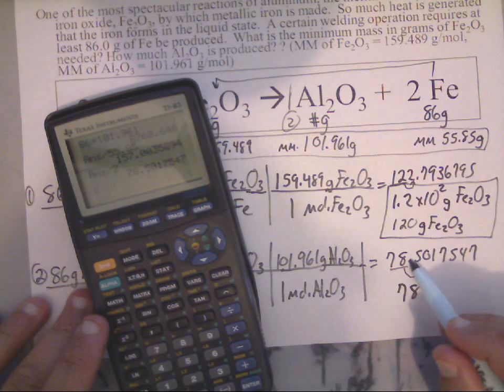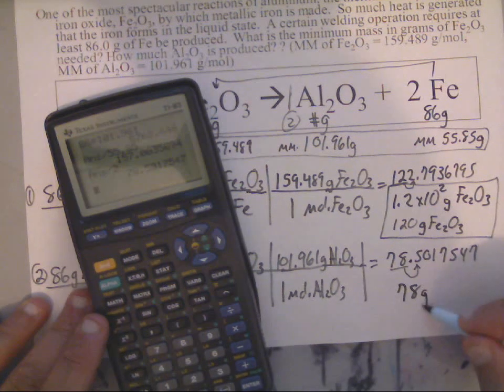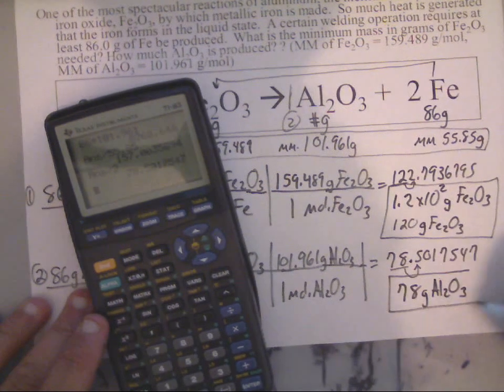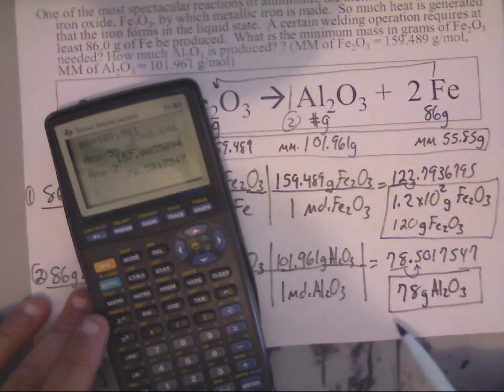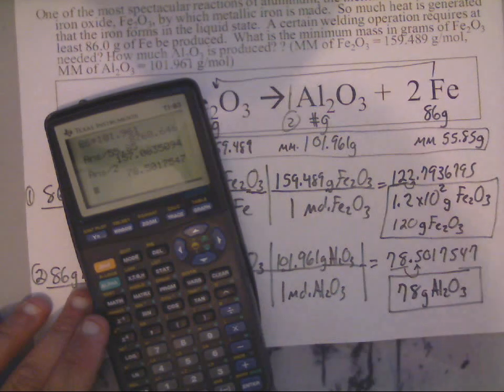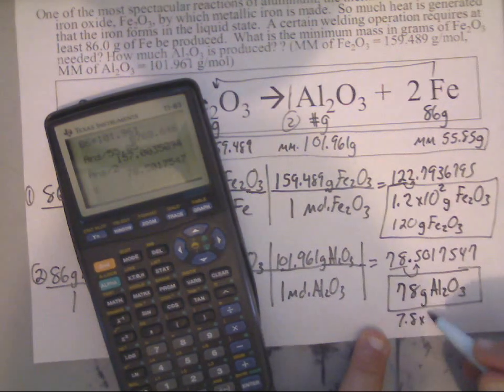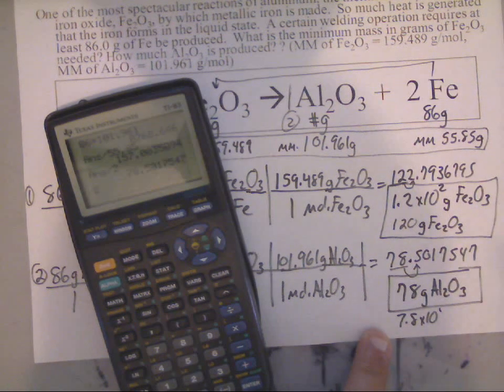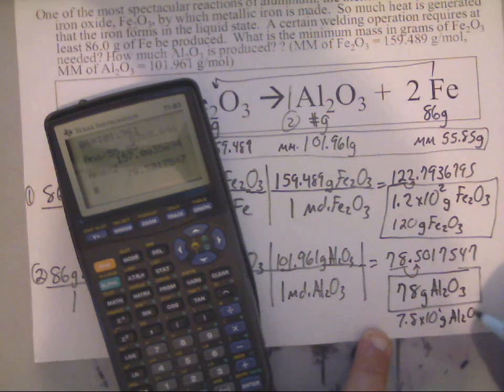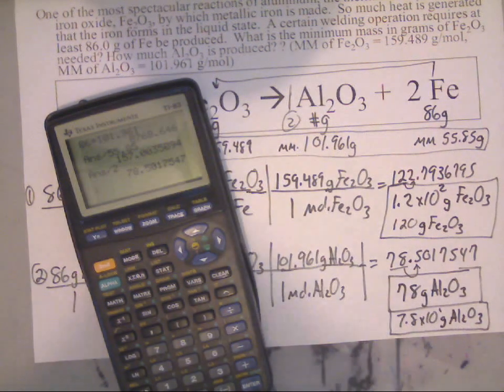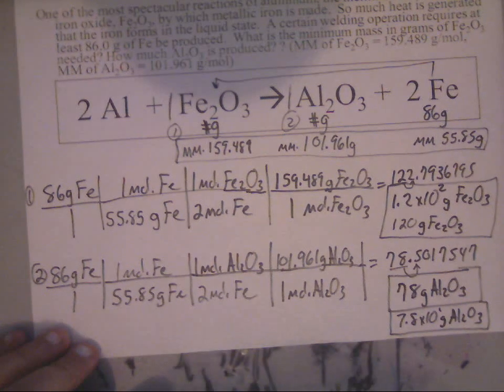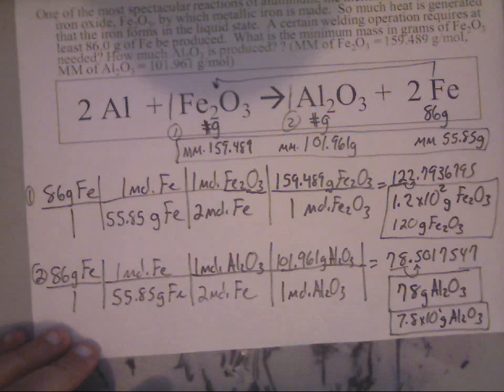Technically it's supposed to be 78 because I know, normally in traditional math you would write 79 there, but in sig fig rules, if the number is even and the number to the right is 5, it stays even. So that's 78 grams of Al2O3. If you did want to write that in scientific notation, just to make it look like that one, it'd be 7.8 times 10 to the first grams of Al2O3. Alright guys, I hope this helps.